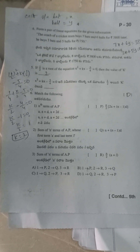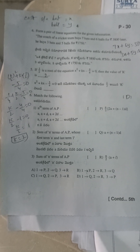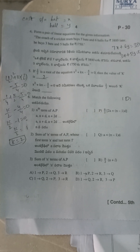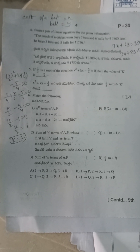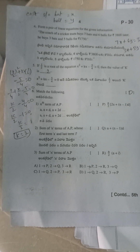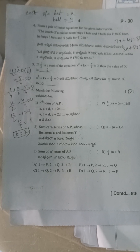Fifth question: if 1/2 is the root of the equation x² + kx − 5/4 = 0, then the value of k is 2.